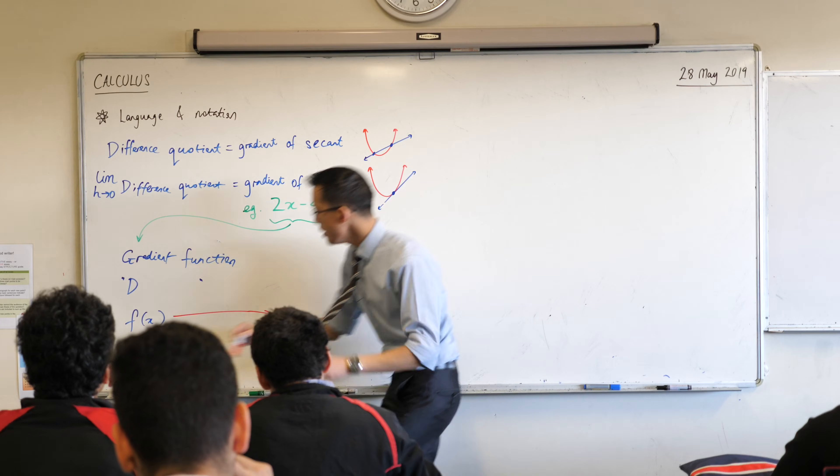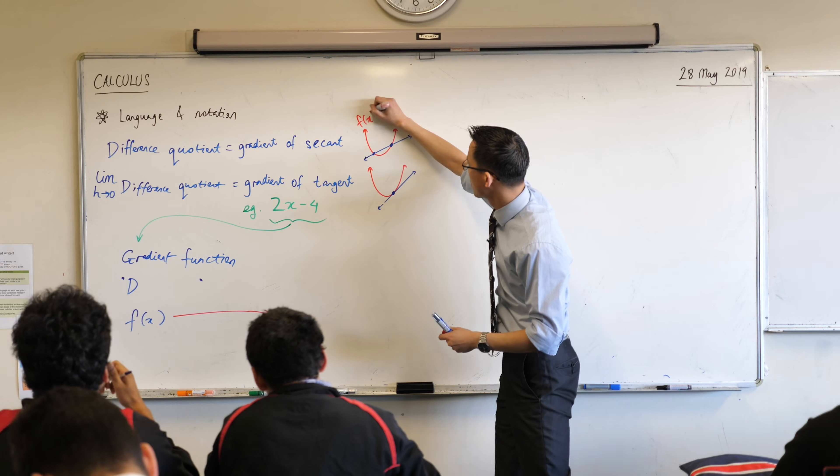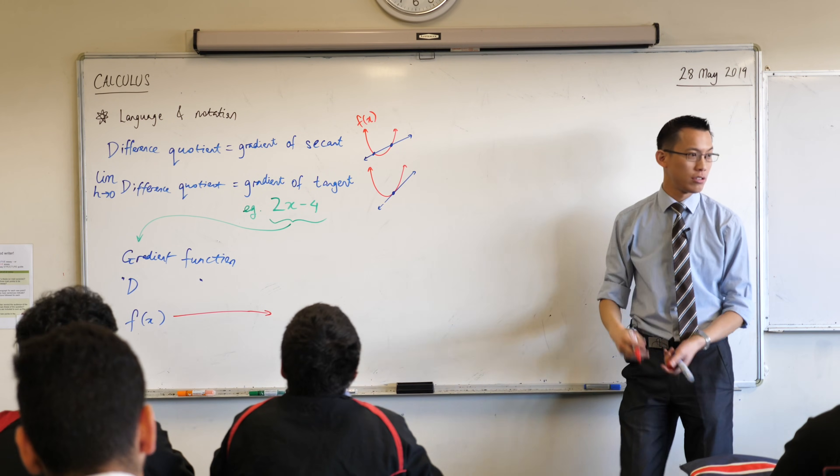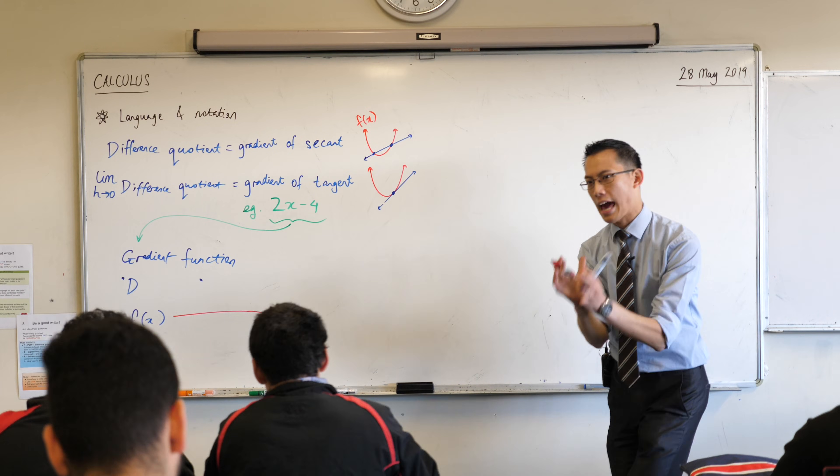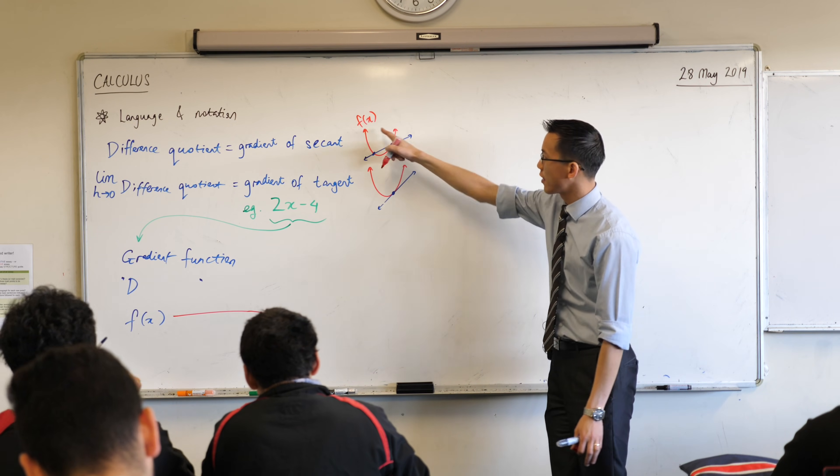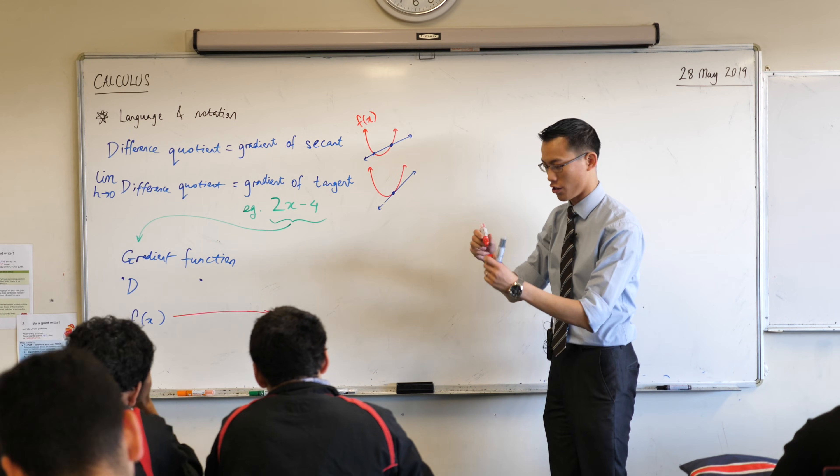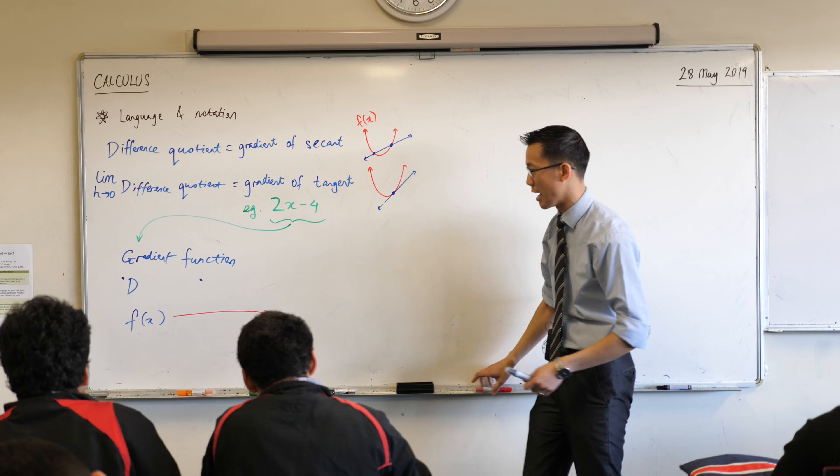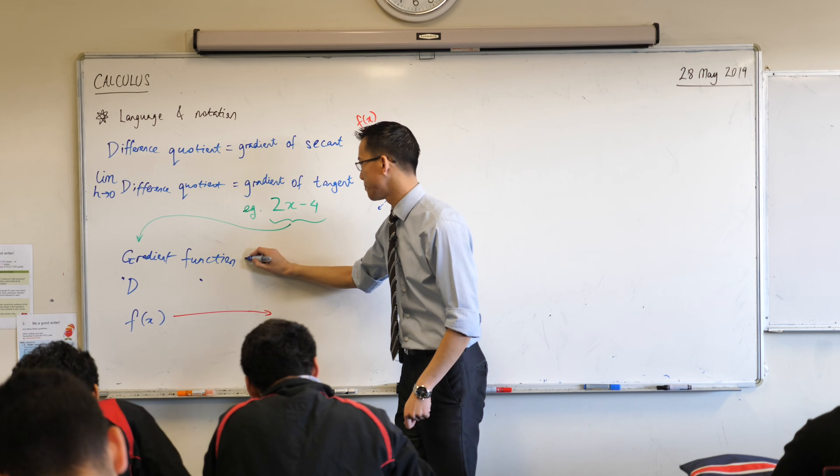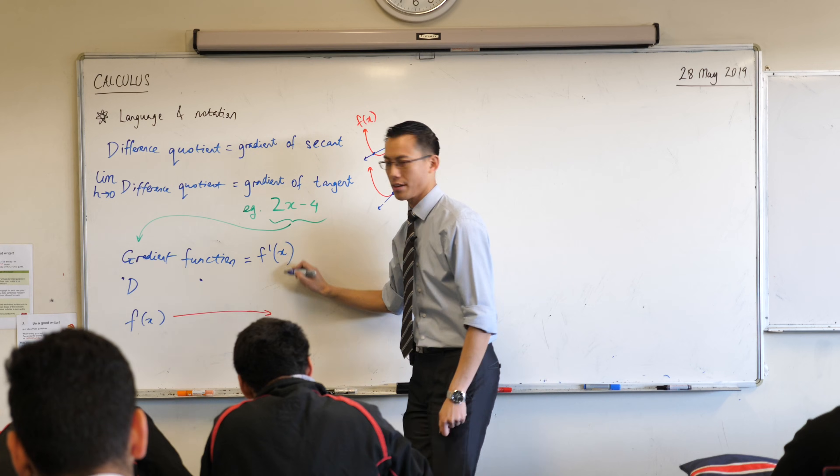Actually, I might write that. If this red thing was f of x, I could call the gradient function something else, g of x, if you like. But I want to capture that the gradient function is related to this original function. So, instead of giving it a whole separate name, I'm going to call it f dash x, or f'(x).